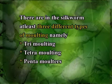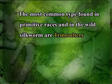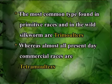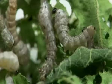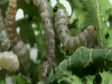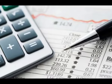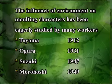There are in the silkworm at least three different types of moulting. The most common type found in primitive races and in the wild silkworm are tri-moulters, whereas almost all present-day commercial races are tetra-moulters. Occasionally, a few tri-moulters or penta-moulters appear in tetra-moulting races. The influence of environment on moulting characters has been eagerly studied by many workers: Toyama in 1912, Ogura in 1931, Suzuki in 1947, and Murahashi in 1949.